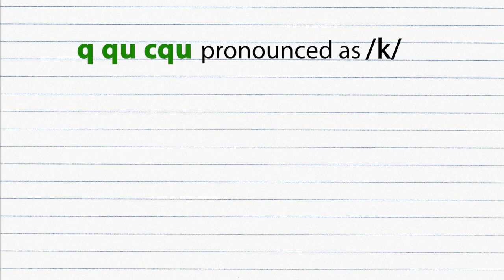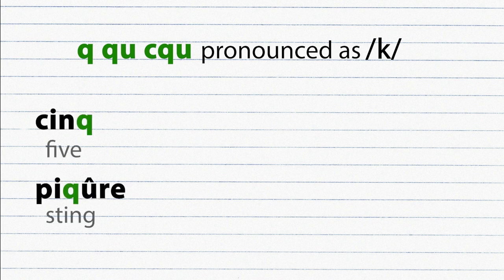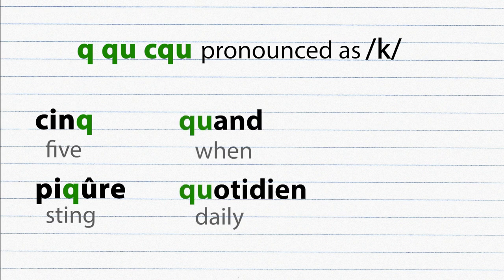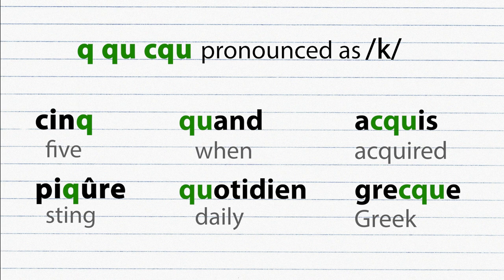These three are all pronounced as K. Example: cinq, bicyclette, can, quotidien, à qui, grec.